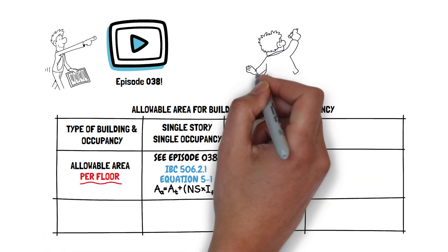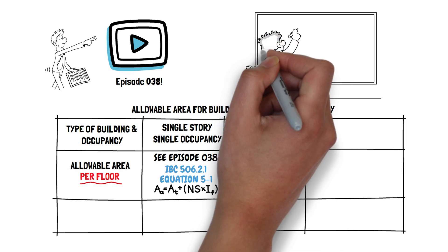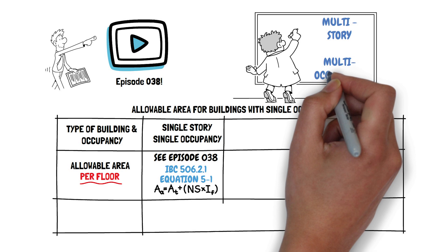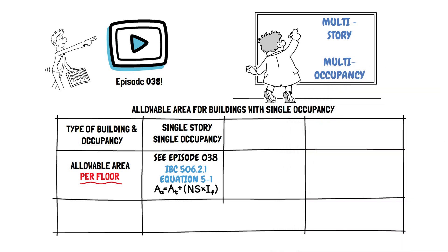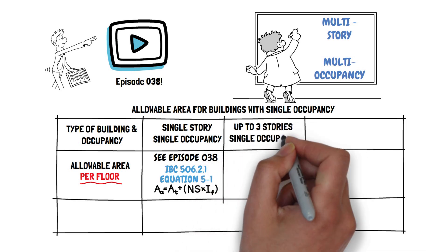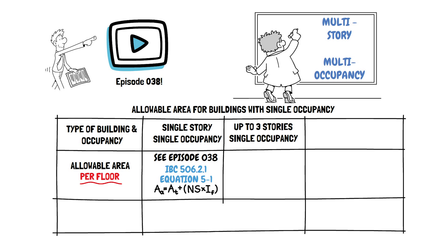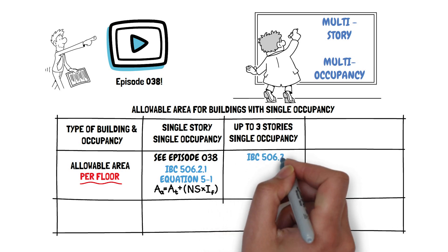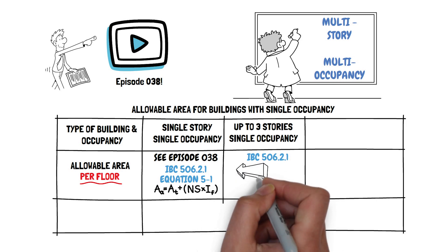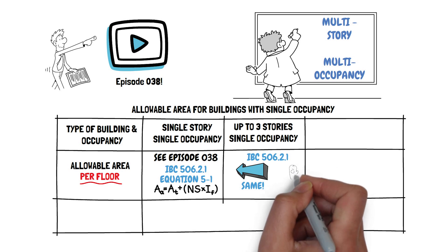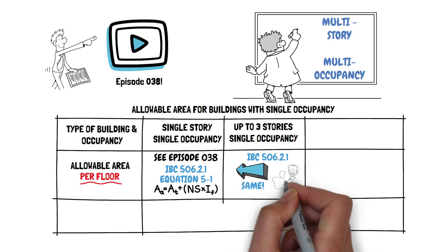Today, we are going to show you how to figure out the allowable area per floor for multiple-story buildings and buildings with multiple occupancies. For our first scenario, let's talk about a building with a maximum of three stories above grade in single occupancy. Finding the allowable area is simple. Per IBC 506.2.1, the allowable area per floor would be the same exact area as that discussed in episode 38. No change.